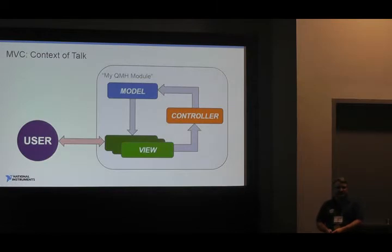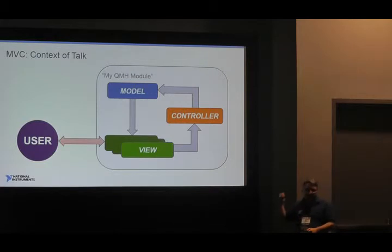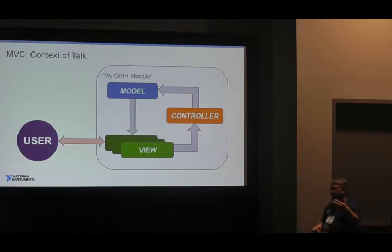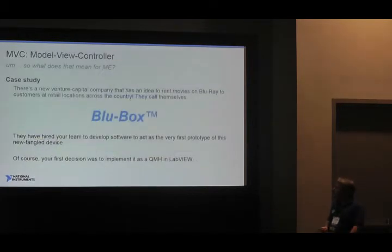I redid the MVC diagram slightly from Wikipedia. In my mind, the user doesn't directly interface with the controller — the user interfaces with the user interface. So the view modifies the controller, the controller modifies the model, and the view decides what to display based on the model. I'm using colored boxes for the rest of the presentation: blue means model, orange means controller, green means view.